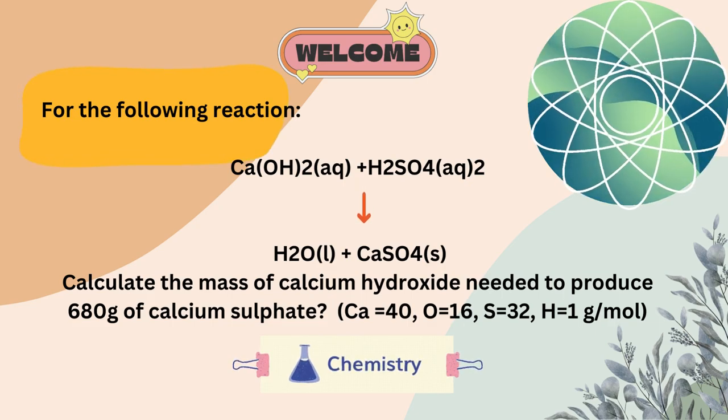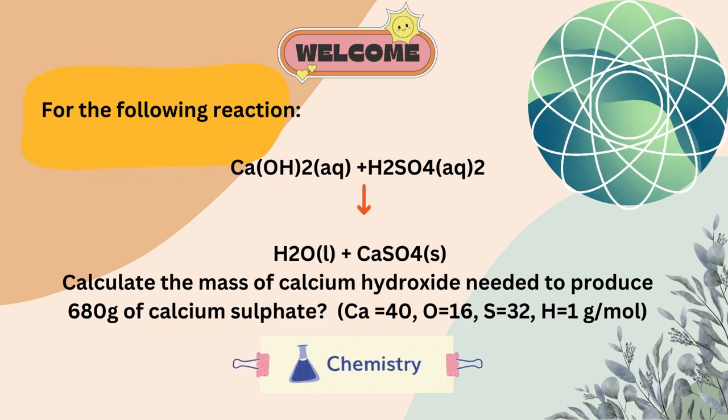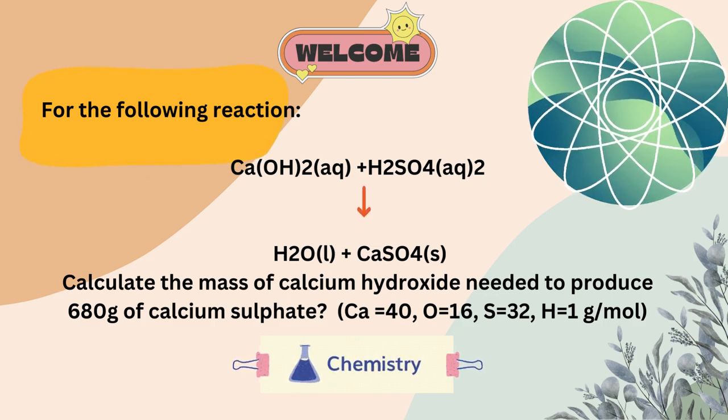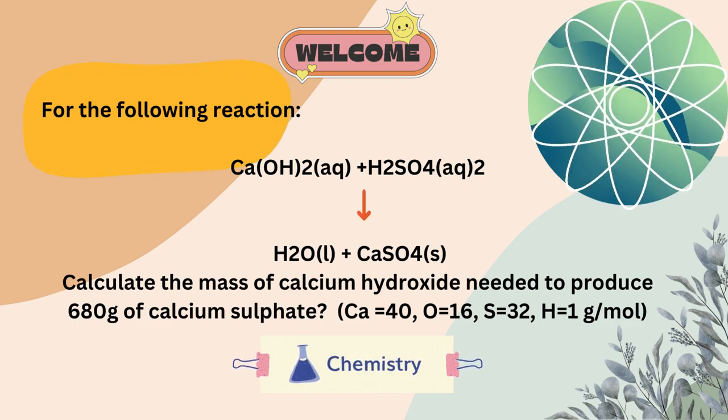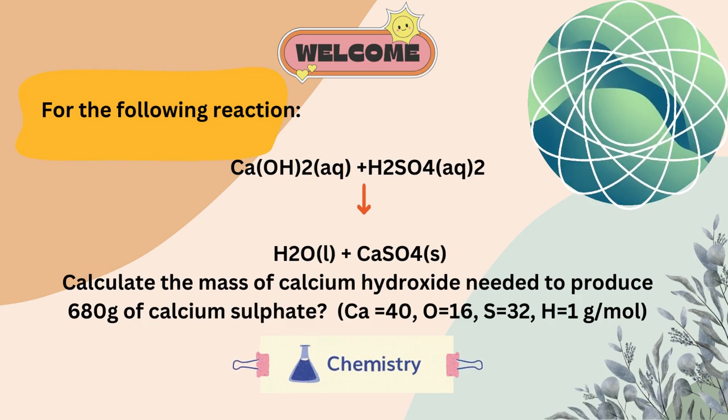For the following reaction, calcium hydroxide reacts with sulfuric acid and produces calcium sulfate and water. Calculate the mass of calcium hydroxide needed to produce 680 grams of calcium sulfate. Atomic mass: Ca equals 40, O equals 16, S equals 32, and H equals 1 gram per mole.